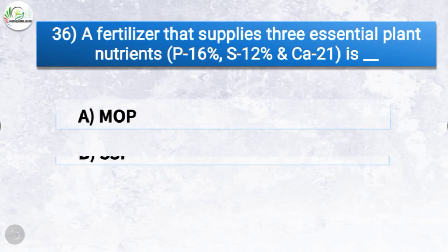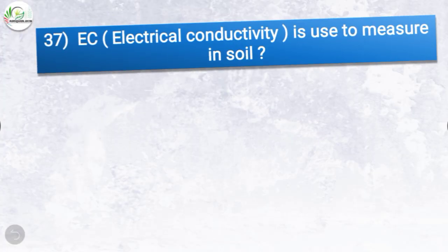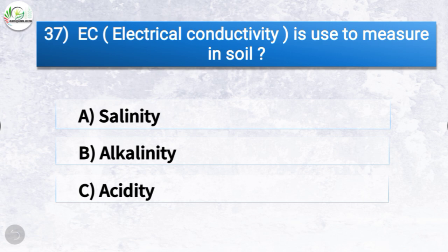Question number thirty-six: a fertilizer that supplies three essential plant nutrients is which one? The options are MOP, SSP, neem-coated urea, or biosuper. The correct answer is option B, SSP. So SSP, or single super phosphate, supplies three essential plant nutrients: phosphorus 16%, sulfur 12%, and calcium 21%.